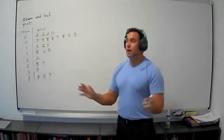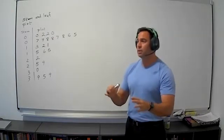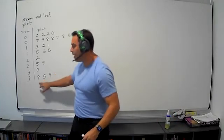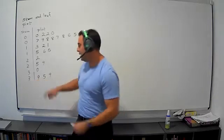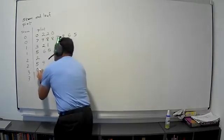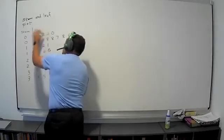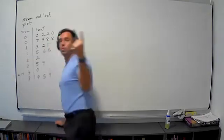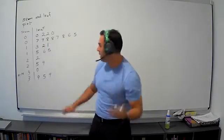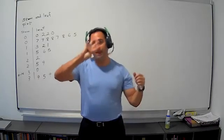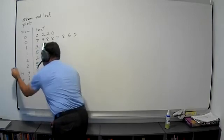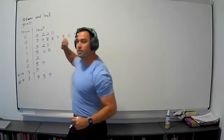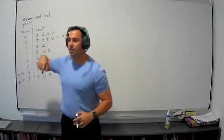Now this is called a stem and leaf plot. Let me just kind of go through it again. So here's 39, 35. What I did is — if the leaf was between zero and four, we have zero, one, two, three, four, I had it here. And then we had five, six, seven, eight, nine here. And that's how I separated them. The top one deals with leaves from zero to four, the bottom one dealt with leaves from five to nine.